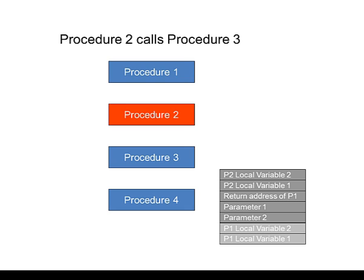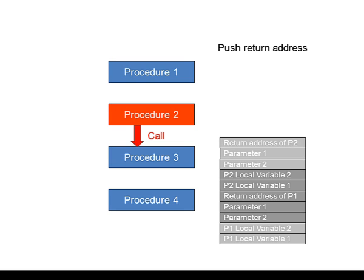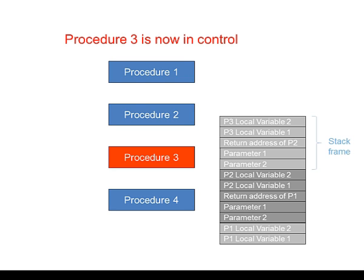Suppose now that Procedure 2 calls Procedure 3. As before, any parameters which Procedure 3 is expecting are pushed onto the stack. Next, the return address of Procedure 2 is pushed onto the stack — this comes from the CPU's program counter. Finally, any local variables declared inside Procedure 3 are also pushed onto the stack. So Procedure 3 is now in control, and its stack frame is in place so it can get a hold of any data it needs.